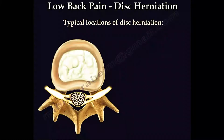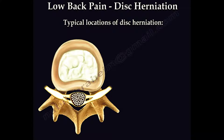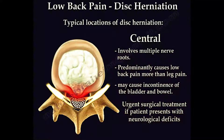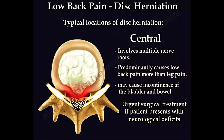There are three typical locations for disc herniations. The first is central, which is a rare condition. It affects multiple nerve roots, and the patient will have back pain more than leg pain. It may cause incontinence of the bladder and bowel, and urgent treatment is necessary if the patient presents with neurological deficit.